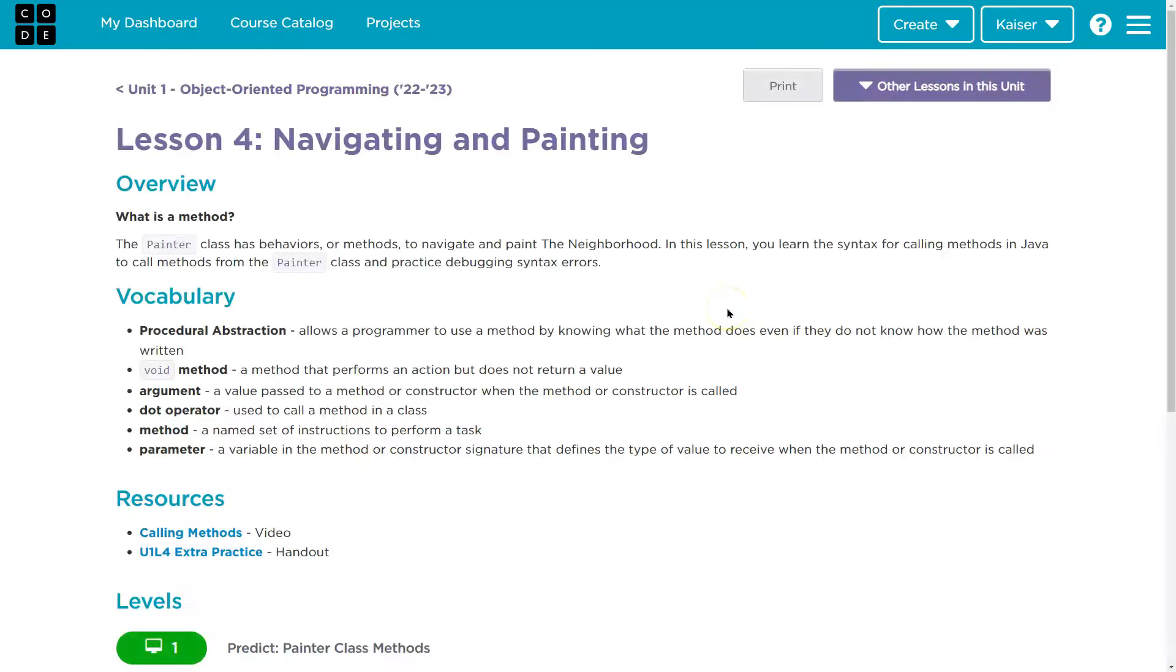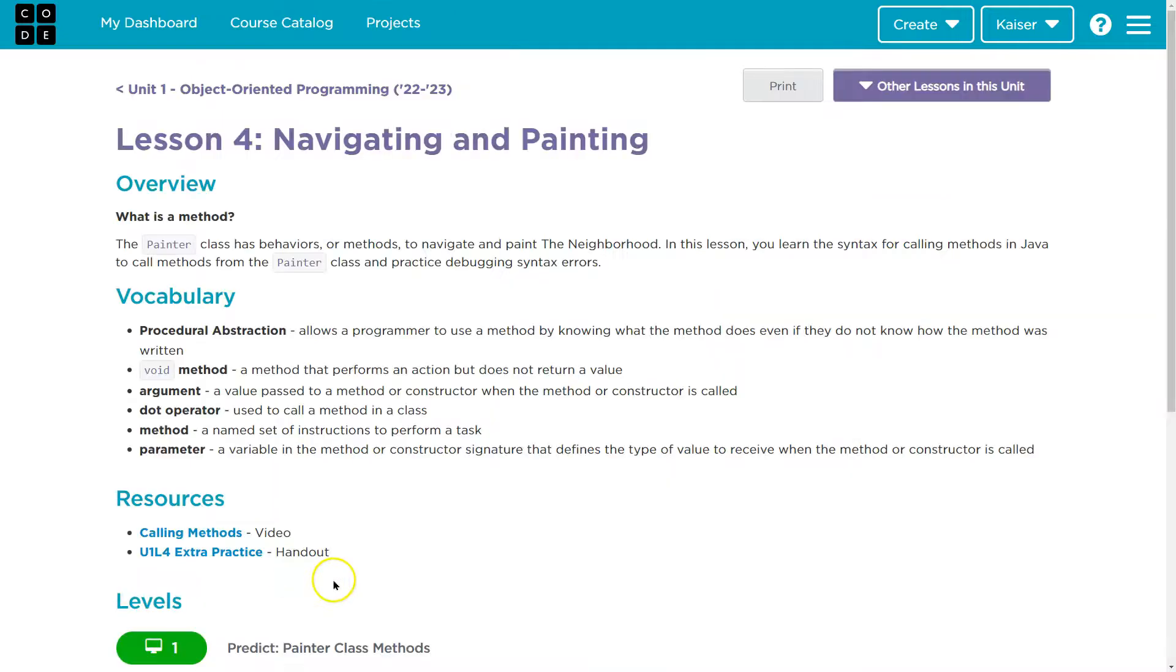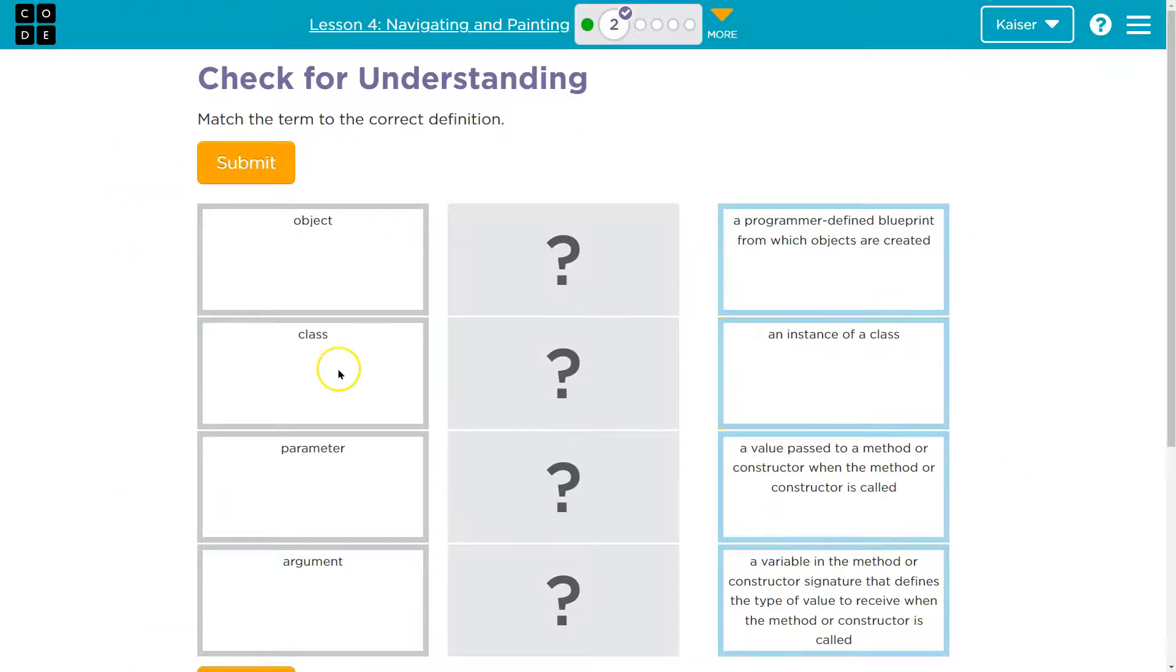Click on this, and let's see. We got procedural, abstraction, method, argument, dot operator, method, and parameter. Argument. A value passed to a method or constructor when the method constructor or constructor is called.